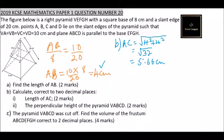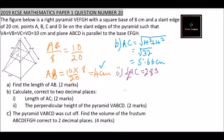Roman numeral two: the perpendicular height of pyramid VABCD. We can use half of AC. Half of AC equals half of 5.66, which is 2.83 centimeters. We can now use the slanting side of 10 and the half-diagonal of 2.83 to find the height of pyramid VABCD.